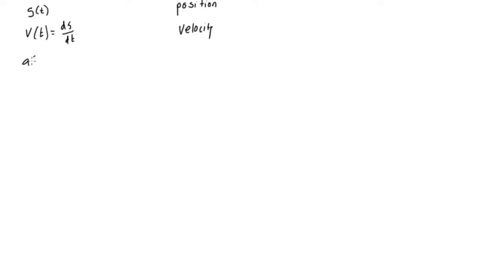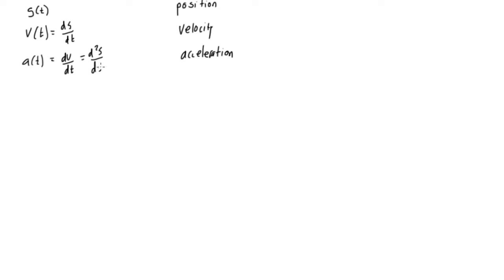We also have acceleration — let's call it a at t — which is equal to the change in velocity over time. We can write this as dv/dt, which is just the change in v over the change in time. But if v is ds/dt, then we're taking the derivative of ds/dt, so we're basically just taking the second derivative of s of t. We can write this as d²s/dt² — the second derivative of position, or the first derivative of velocity.